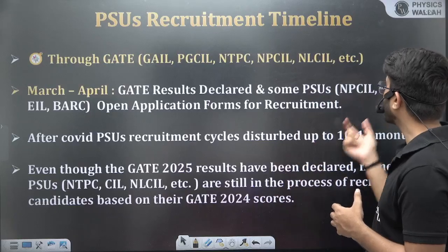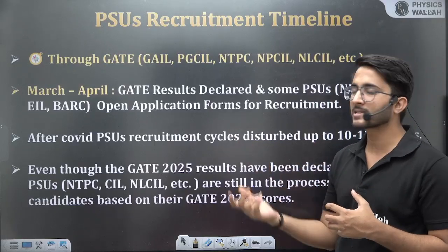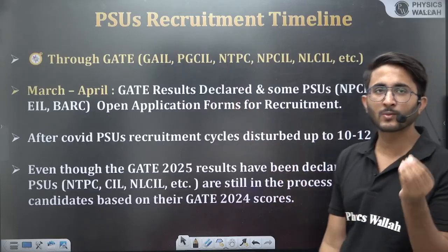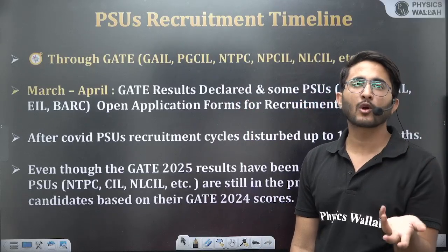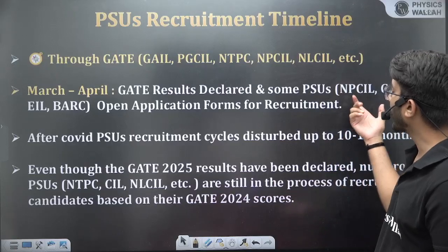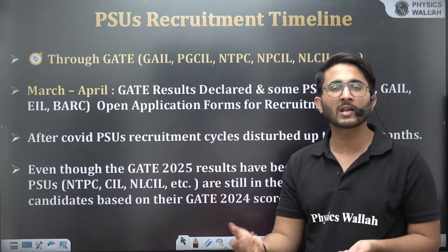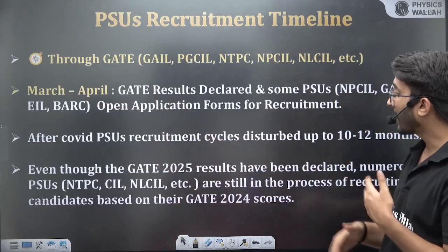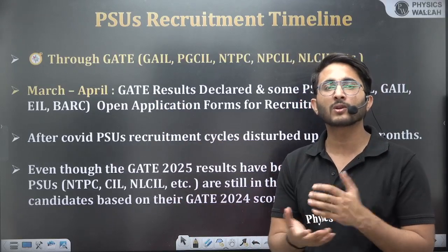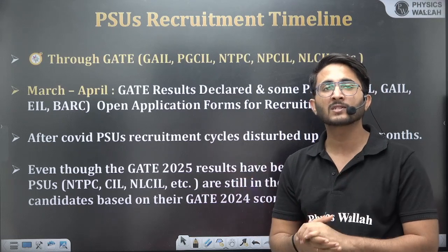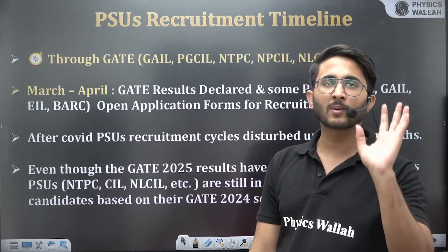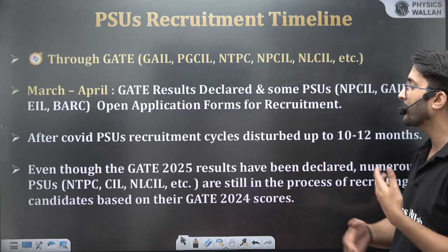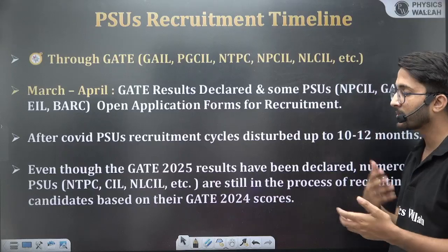Some PSUs like NPCIL, GAIL, EIL, and BPCL start releasing their notifications between March and April, after the GATE result is declared. This year, NPCIL, Green India, and EIL have already released their notifications. Some other PSUs also recruit in upcoming months — there is no fixed month for any particular PSU's recruitment.